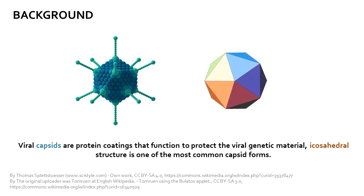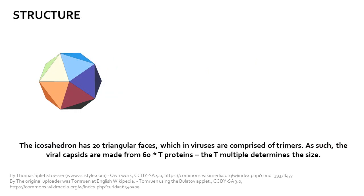One of the most common structures of the capsid is icosahedral. An icosahedron is a geometric shape with 20 triangular faces, which in viruses are comprised of trimers. As such, the viral capsids are comprised of multiples of 60 times T proteins, and T determines the size of the capsid in terms of the number of subunits.